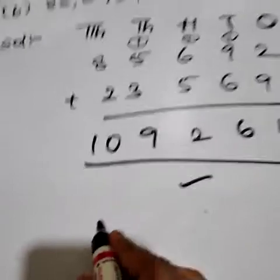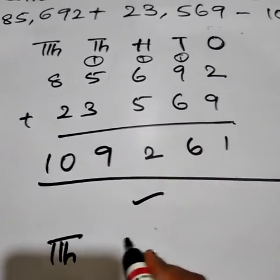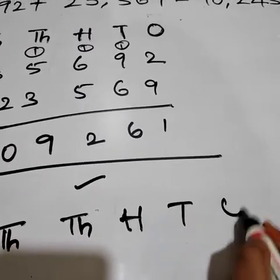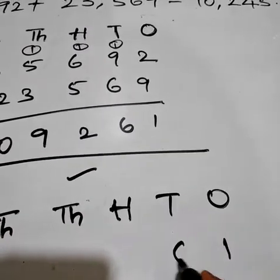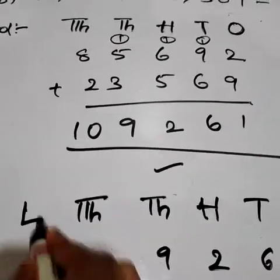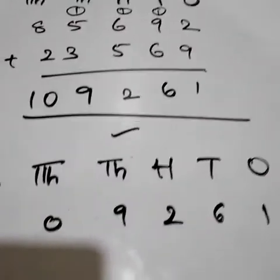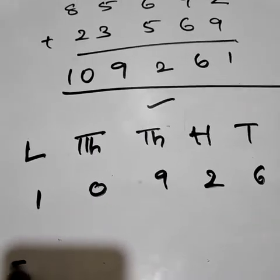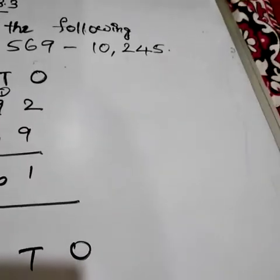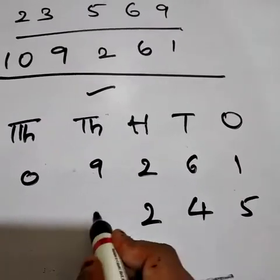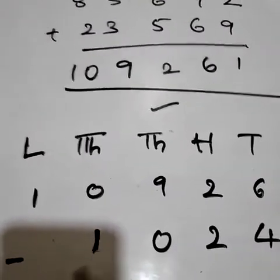We got this answer. So what we have to do here? We have to subtract with another one. 1,09,261. This will be lakh. So 1,09,261 minus 10,245.